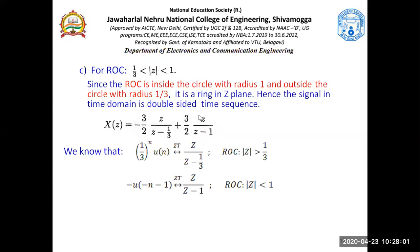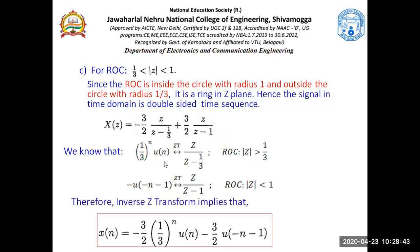The same ROC is split: |Z| greater than 1/3 and |Z| less than 1. For |Z| less than 1, it should be a negative time sequence in the time domain. For |Z| greater than 1/3, it should be a positive time sequence. That's why with the first term it is a positive time sequence and with the second term it is a negative time sequence.